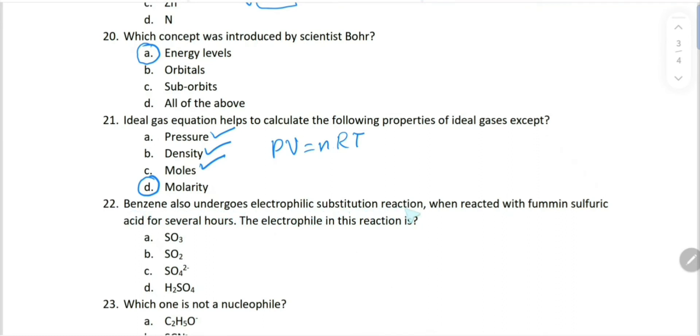Benzene also undergoes electrophilic substitution reactions when reacted with fuming sulfuric acid for several hours. The electrophile in this reaction is... when we do sulfonation of benzene with sulfuric acid, the electrophile is SO3, sulfur trioxide. Because fuming sulfuric acid is H2S2O7, which is a mixture of sulfuric acid acting as a catalyst and sulfur trioxide acting as an electrophile.